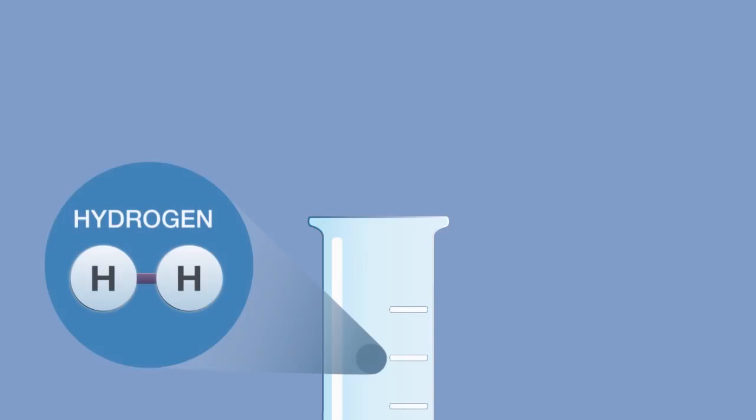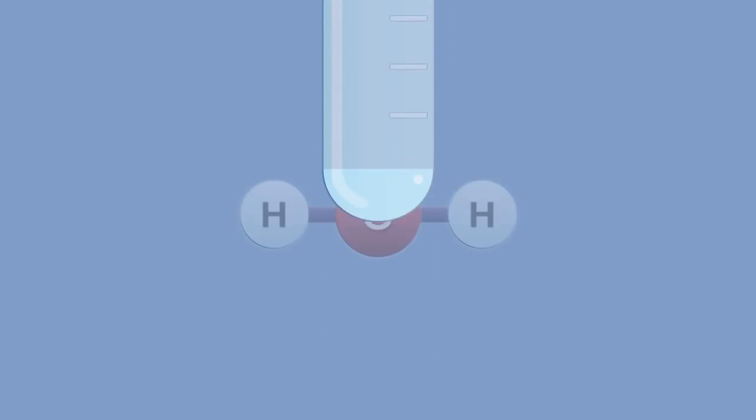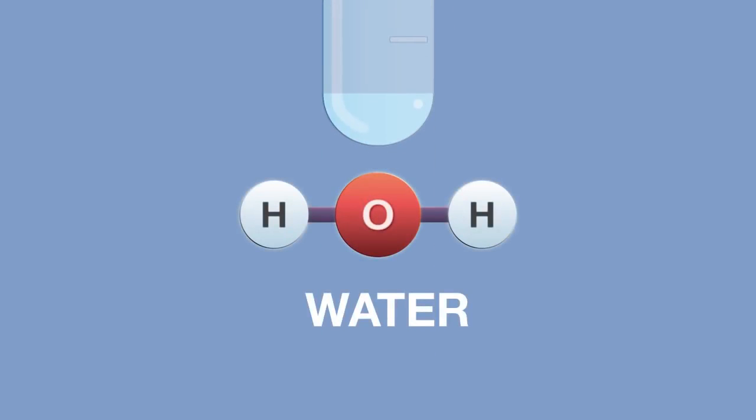To test for hydrogen, place a lit splint at the mouth of the reaction vessel. You should hear a very distinctive squeaky pop, which confirms its presence. This is due to the combustion reaction of hydrogen in the presence of oxygen, creating water as the only product.